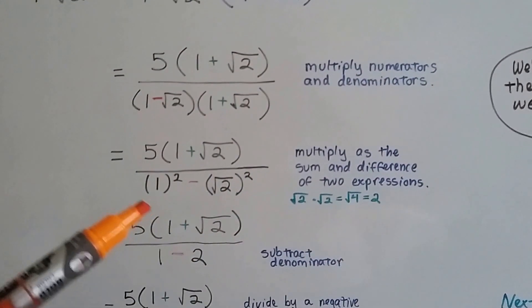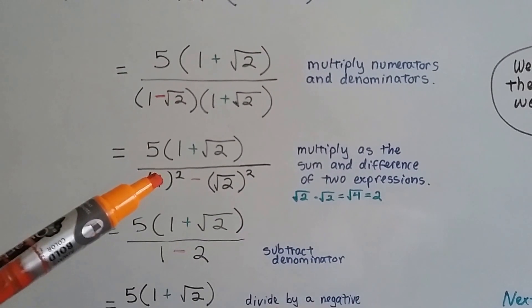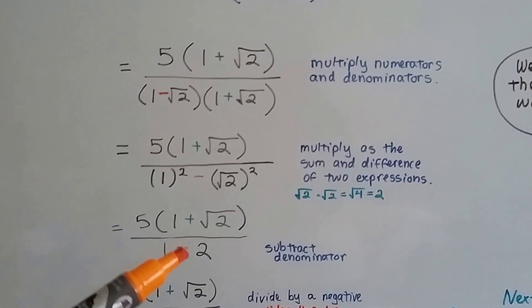And the square root of 4 is just a 2, isn't it? So now we've got 1 times 1, which is a 1, minus 2.